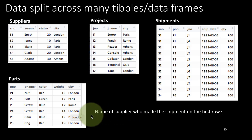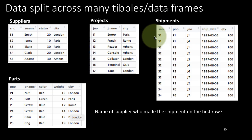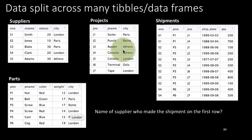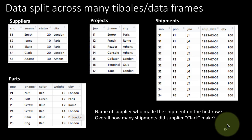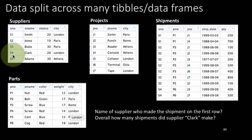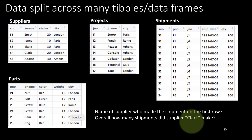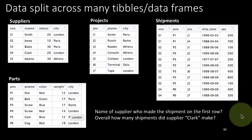So we might have questions like: What is the name of the supplier who made the shipment on the first row? We know the supply number is S1 — scoot over to the suppliers table and see that S1 is Smith. Smith made the first shipment, and in fact Smith also made the second shipment. Another question: overall, how many shipments did supplier Clark make? We find that Clark is supplier S4, then come to the shipments table and find all shipments made by S4. Answering these questions requires us to get data from more than one table.